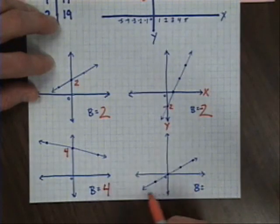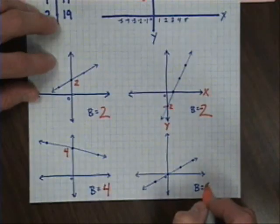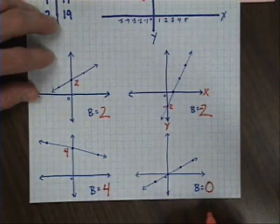And this unique one, my line crosses exactly at the origin, so I'm going to go ahead and put my y-intercept is 0.